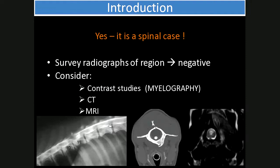A benefit is that a CSF sample can be collected at the same time. CT is very useful for evaluating bony abnormalities such as bone lysis, new bone formation, or soft tissue mineralization. In this image — a transverse image through cervical vertebra 1 — the bony detail is excellent. CT myelography can also be performed, similar to that done with radiology, but transverse images can be acquired.